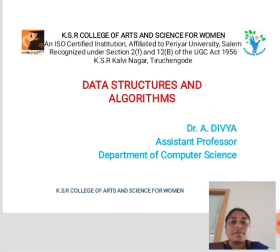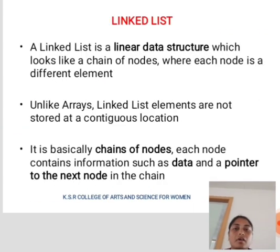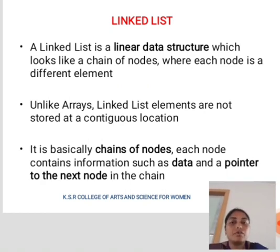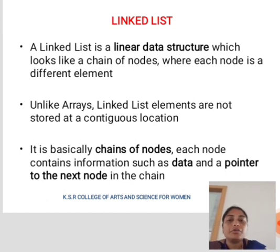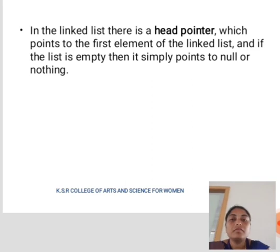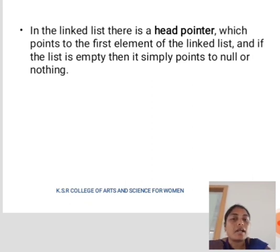Today we are going to discuss the topic data structures and algorithms — Linked list. A linked list is a linear data structure which looks like a chain of nodes where each node is a different element. Unlike arrays, linked list elements are not stored at a continuous location. It is basically a chain of nodes. Each node contains information such as the data and a pointer to the next node in the chain. In the linked list there is a header pointer which points to the first element of the linked list, and if empty it simply points to null or nothing.